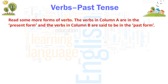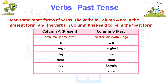Read some more forms of verbs. The verbs in Column A are in the present form, and the verbs in Column B are in the past form. Time words: Now, Every day, Often (present); Yesterday, Earlier, Ago (past). Is / Was. Laugh / Laughed. Play / Played. Come / Came. Buy / Bought.